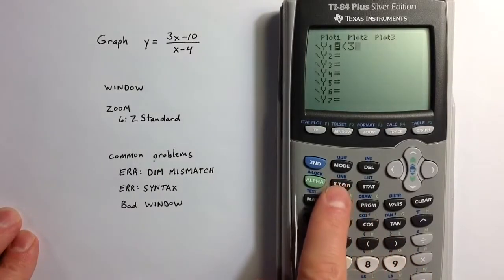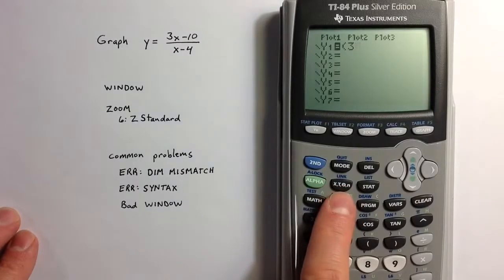3x minus 10, and also around the denominator. When you're in function mode, the variable key here, the x, t, theta, and n key will put an x on the screen.